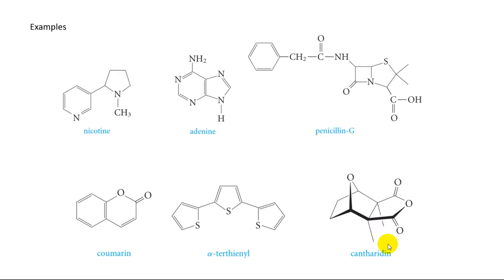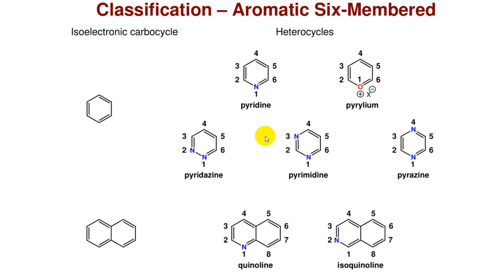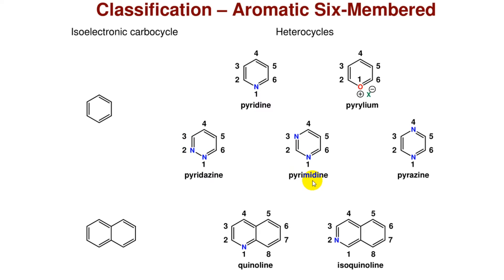Classification — aromatic six-membered: the isoelectronic six-membered carbocycle benzene, with one or several heteroatoms, forms uncondensed cycles. For example, with one heteroatom: pyridine, and pyrilium salts containing one oxygen atom. Six-membered rings containing two heteroatoms include pyridazine (nitrogen at positions 1 and 2) and pyrimidine (nitrogen at positions 1 and 3).